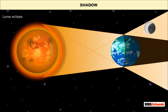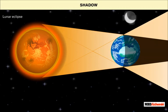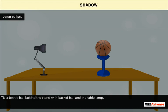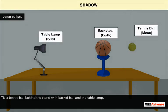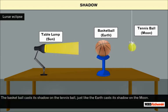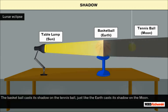Let us perform an activity to show how a lunar eclipse occurs. Take a powerful lamp and place it on a table. Take a basketball and place it on a stand as shown on the screen. Tie a tennis ball behind the stand with the basketball and the table lamp. The table lamp represents the sun, the basketball represents the earth, and the tennis ball represents the moon. Light the lamp. You will observe that the basketball casts its shadow on the tennis ball, just like the earth casts its shadow on the moon.